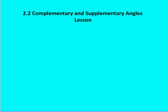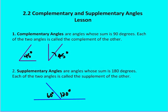What are complementary and supplementary angles? Very simply, complementary angles are angles whose sum is 90 degrees. Each of the two angles is called the complement of the other. So in this diagram, I have two angles, both of which are 45 degrees, and 45 plus 45 equals 90, so these are complementary angles.